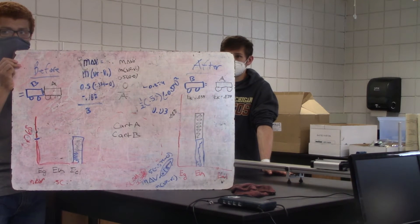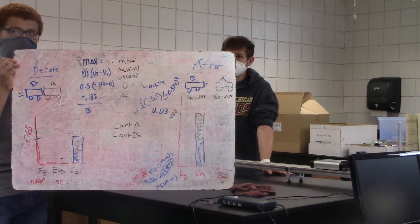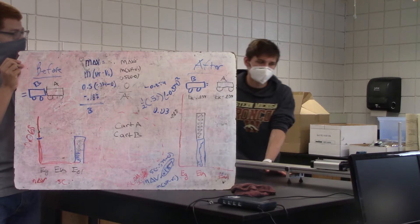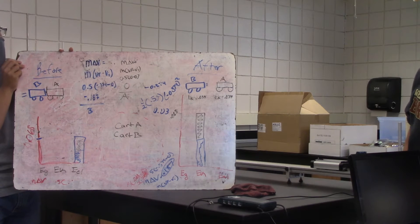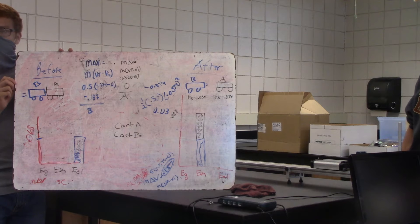Okay. So did you calculate the M delta Vs? Yes. We calculated the M delta V for B. And what did we get? It was negative one point, zero point, one, eight, seven.